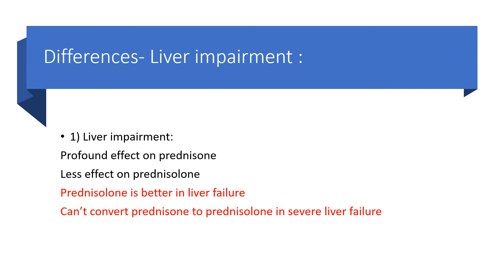Now, the differences. To start with liver impairment: there will be a profound effect of liver failure on prednisone, but less effect on prednisolone. Prednisolone is therefore the better option in the face of hepatic failure, because the failing liver will not be able to convert prednisone to prednisolone, particularly in the face of severe liver failure. So in hepatic failure, choose prednisolone.